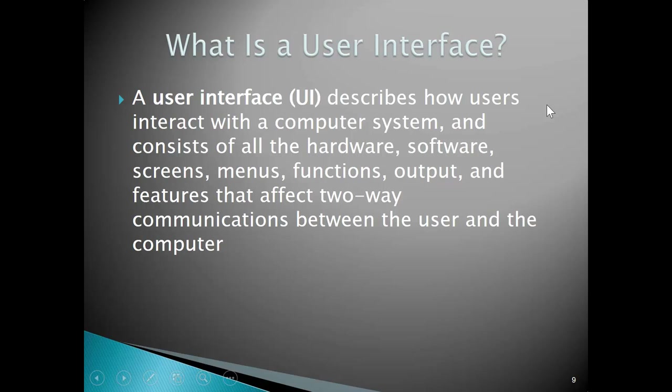A UI or user interface describes how users interact with a computer system and consists of all the hardware, software, screens, menus, functions — everything the system does. A great example is Microsoft Windows and how the user interface has changed. They went away from the standard start menu we all got used to, introduced a welcome screen where all your icons and programs showed up — that was annoying. Users said they wanted the start screen back, so Microsoft did a happy medium, bringing back the start button with familiar functionality plus some new features they feel will create a better user environment.